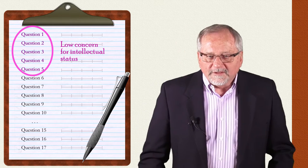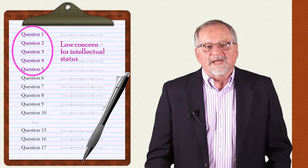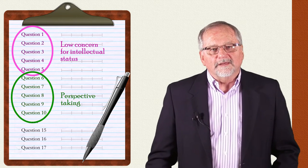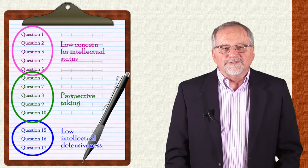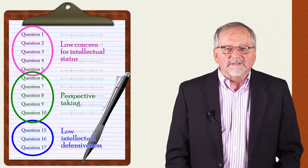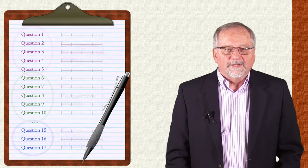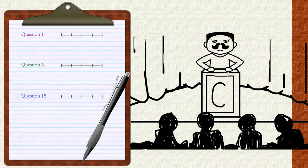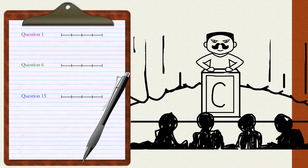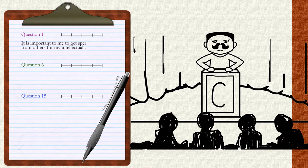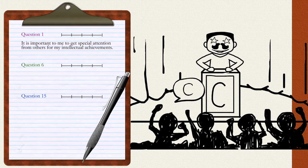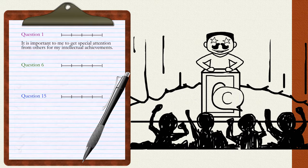The measure resulted in three factors. The first factor is a low concern for intellectual status. The second factor is what's called perspective taking. And the third factor was identified as a low intellectual defensiveness. Sample items include statements such as this. For the low concern for intellectual status, this item is reverse scored: It is important to me to get special attention from others for my intellectual achievements.